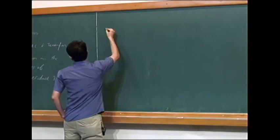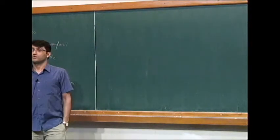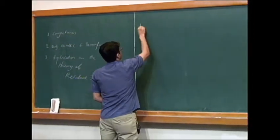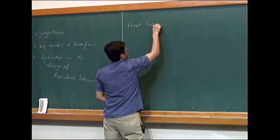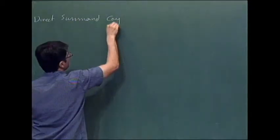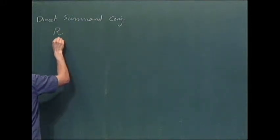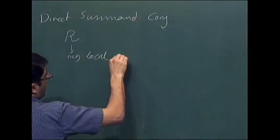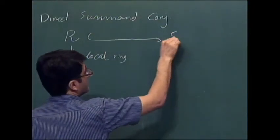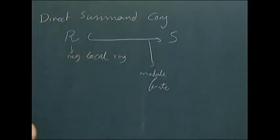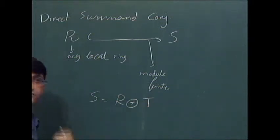The two conjectures I would like to talk about are: one due to Hochster, and the other is the Stillman conjecture. The Hochster conjecture is the direct summand conjecture. The direct summand conjecture is very simple to state: when you have a regular local ring R and a module-finite extension S, then this map splits — S splits as an R-module.